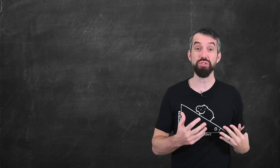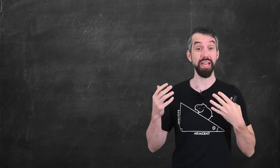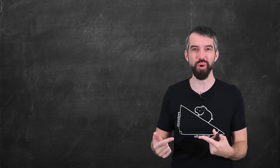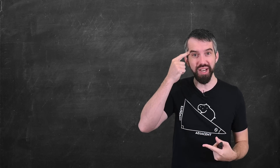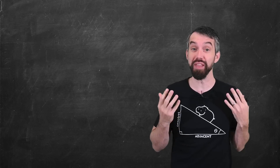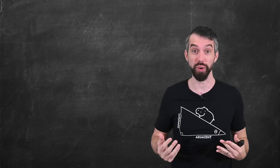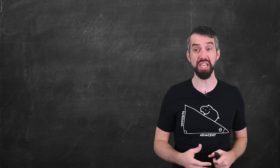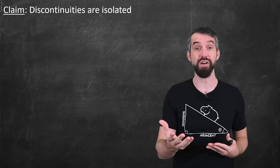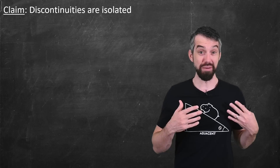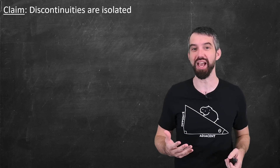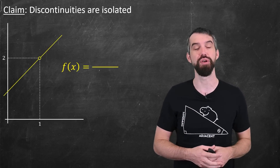I want to show you a bunch of counterexamples in calculus. A counterexample disproves what your intuition might suggest is a very reasonable theorem, but it turns out by the counterexample it is not true. The first claim that you might think is true but isn't is that discontinuities of a function aren't isolated. The reason you might think this is true is because so many examples we see in calculus have isolated discontinuities.